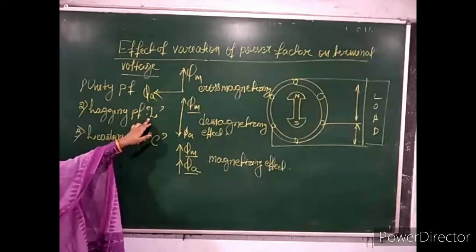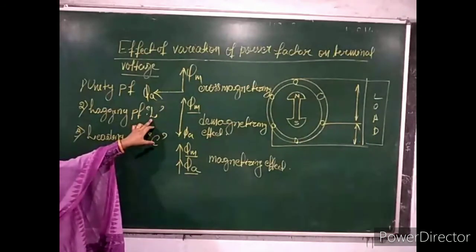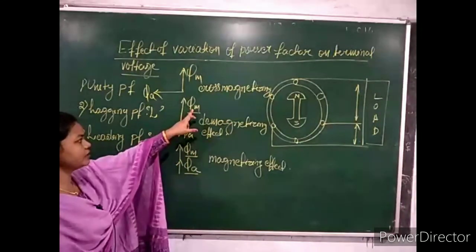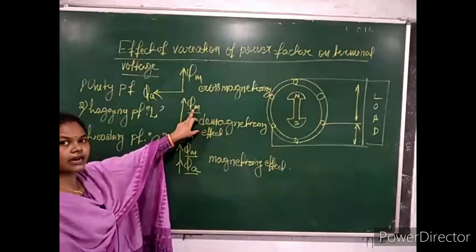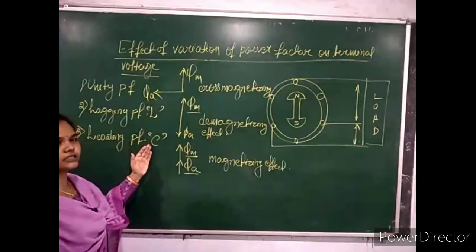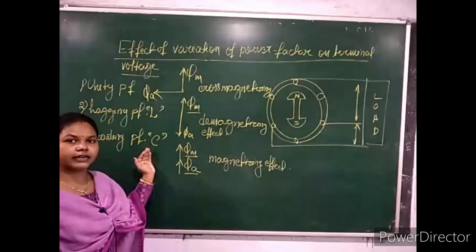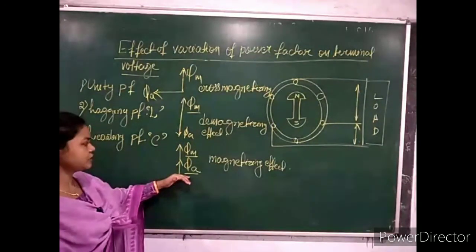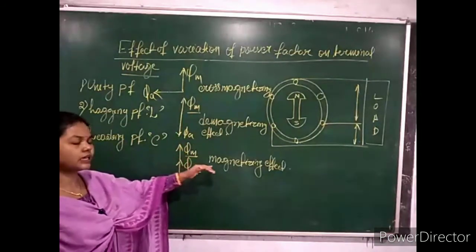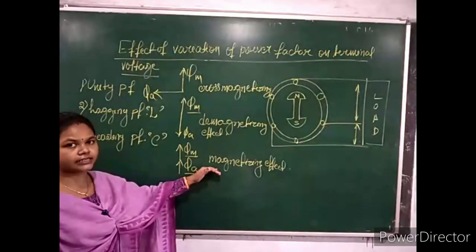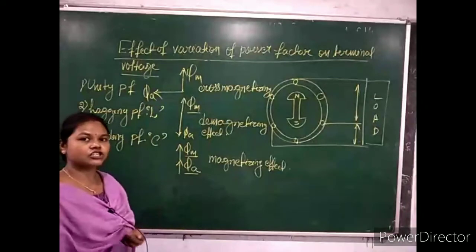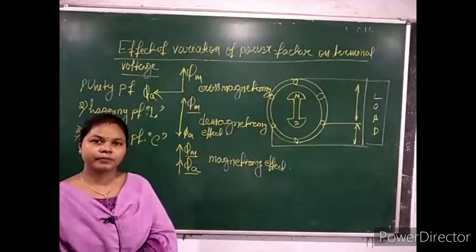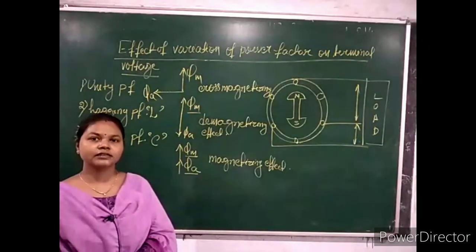If I take an RL circuit — a circuit having some resistance — then the effect of armature flux on the main flux is partly demagnetizing and partly cross-magnetizing. Similarly, in the case of a capacitive circuit with some resistance, the effect is partly magnetizing and partly cross-magnetizing. In this video lecture class, we discuss what is the effect of this power factor on the terminal voltage.